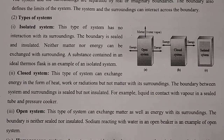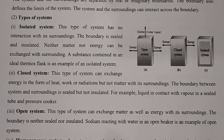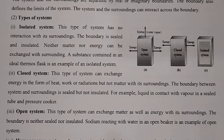Second is the closed system. This type of system can exchange energy in the form of heat, work, or radiation, but not matter, with the surroundings. Energy can be exchanged but matter cannot — that is known as a closed system. The boundary between the system and surroundings is sealed but not insulated. For example, liquid in contact with vapor in a sealed tube, and the pressure cooker — the pressure cooker is the best example of a closed system.